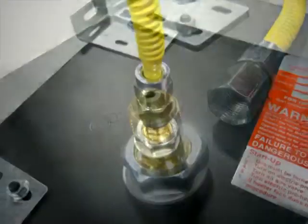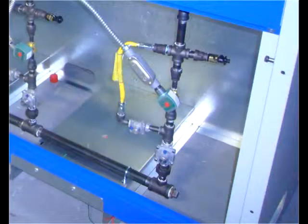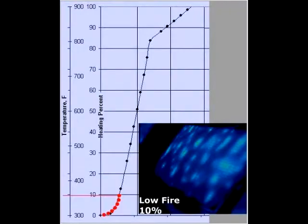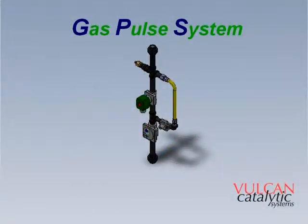Heaters are individually fed by a regulated volume of fuel gas. The volume of gas determines the amount of infrared heat that is generated. It is controlled by Vulcan's unique gas pulse system, or GPS.